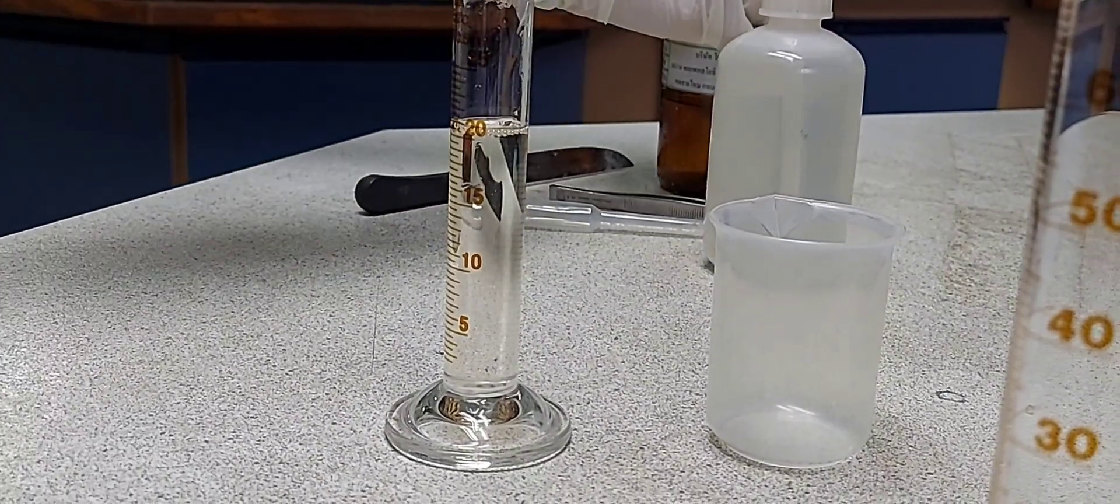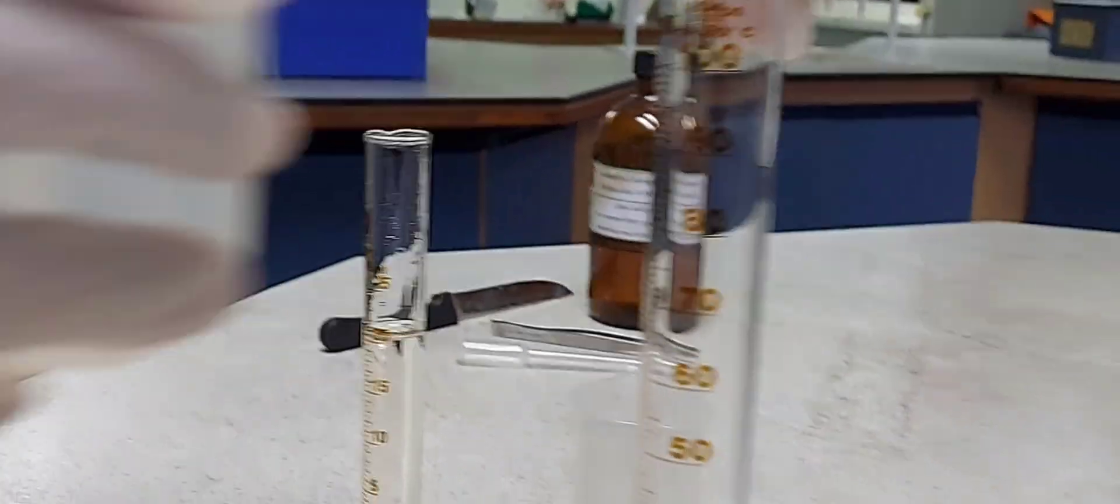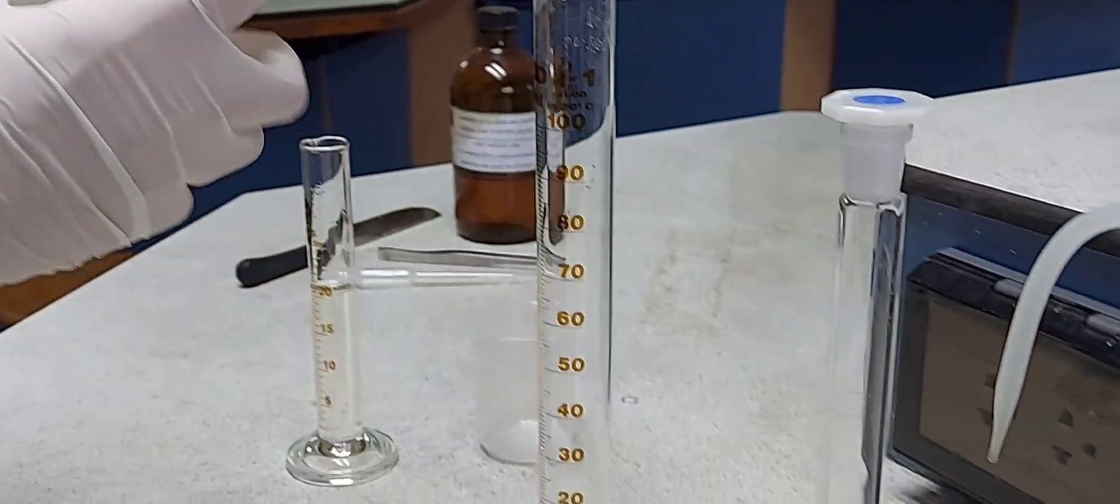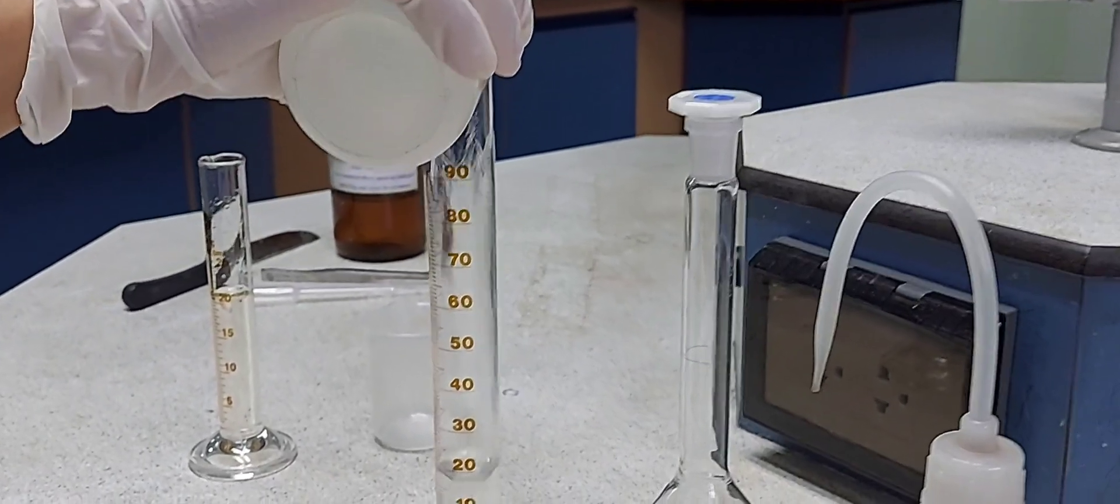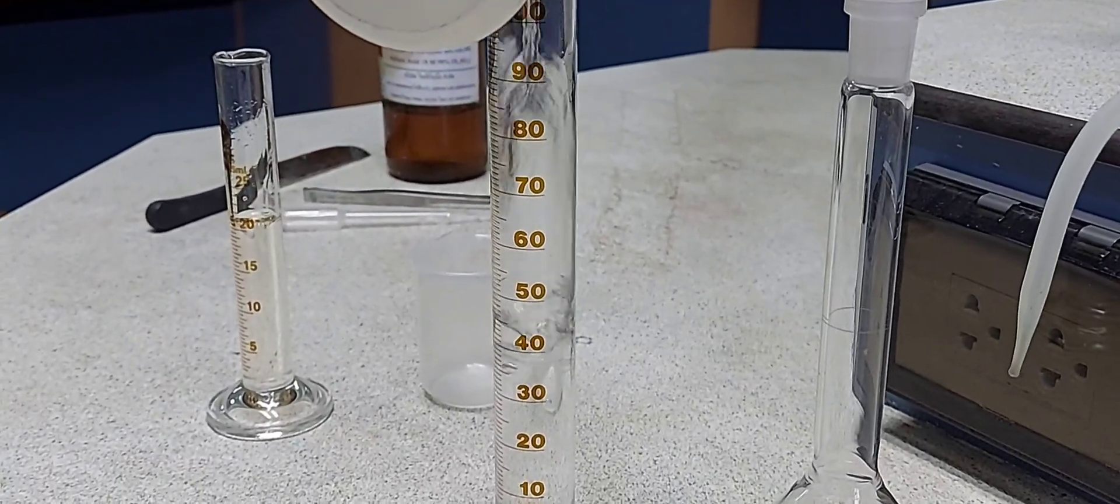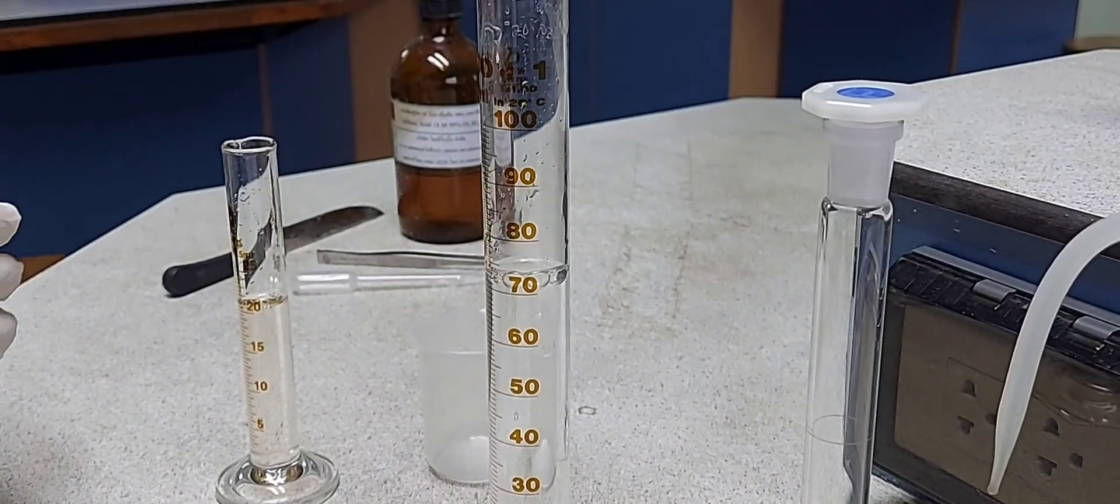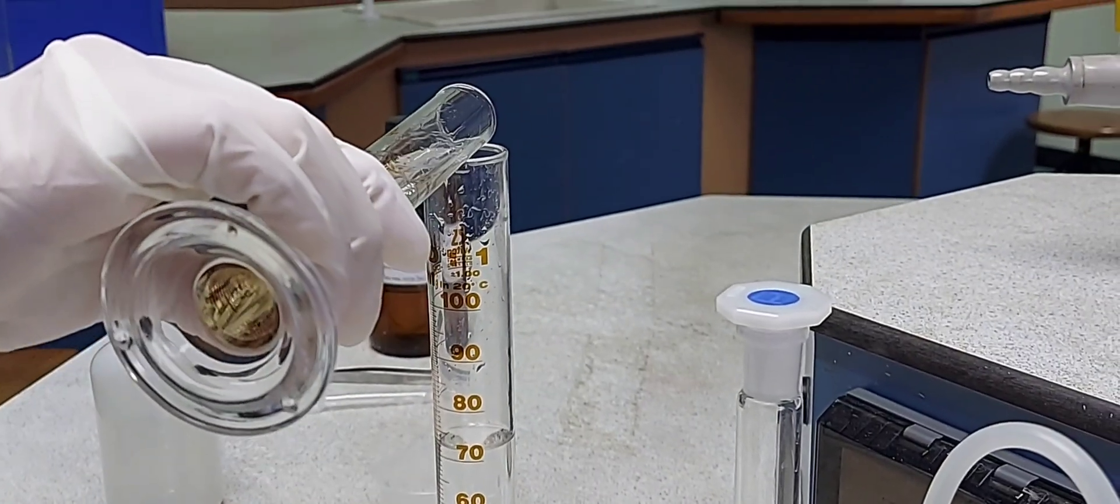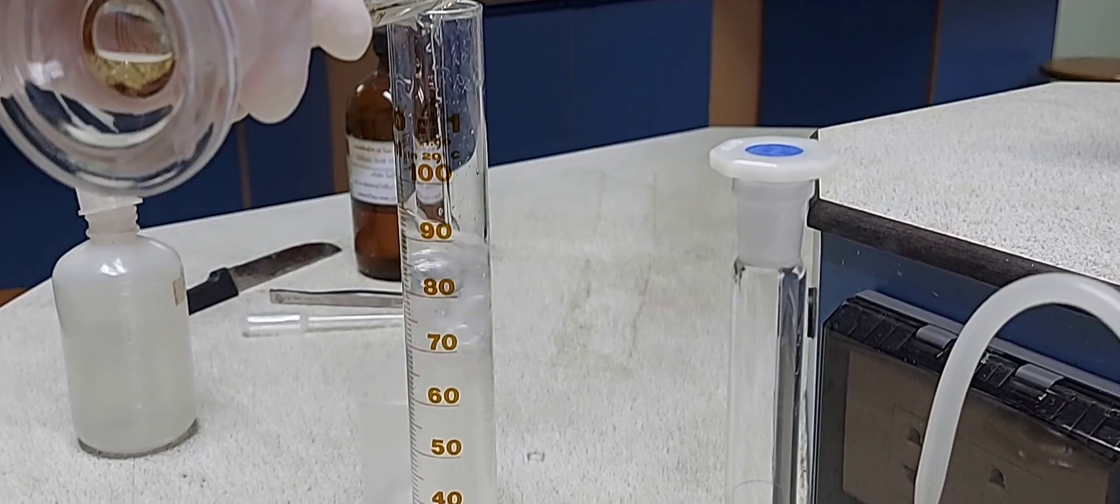So 20.8 ml of concentrated 18 molar acid, and then I am taking about 70 ml of water and adding the remaining acid to the water slowly and gradually.